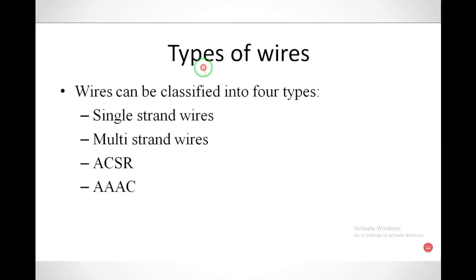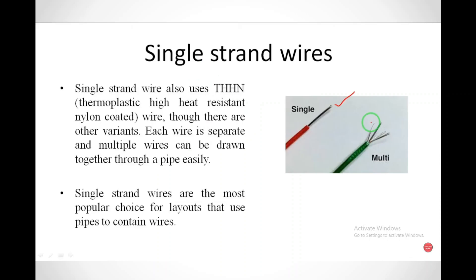Now let us see the types of wires. There are four types: single strand, multi-strand, ACSR, and AAAC. We are going to see each one. The first type is single strand wire.